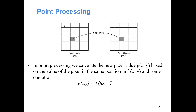Broadly, we are classifying image processing into two types: one is called point processing and the other is called neighborhood processing. In point processing, you have an input image, you do some operation on it, and you get the output image. The particular pixel value in the output image depends only on the particular pixel value at the corresponding position in the input image — you apply a transformation on each input pixel to get the corresponding output pixel.